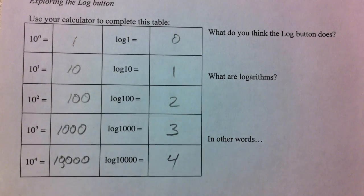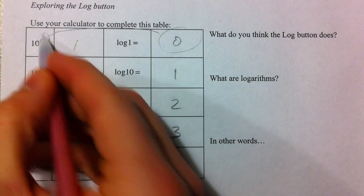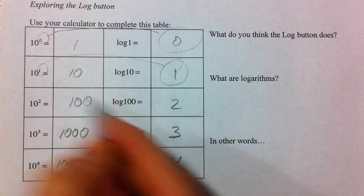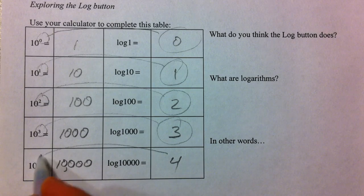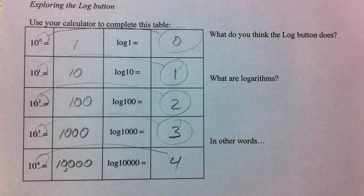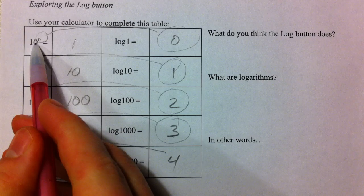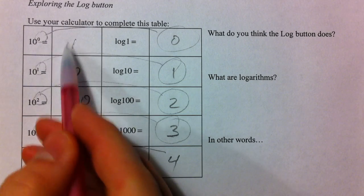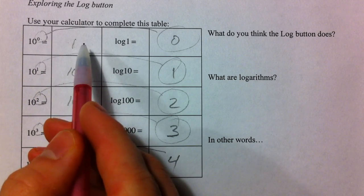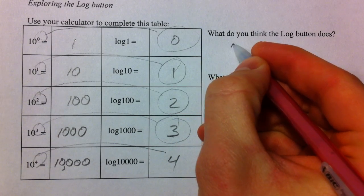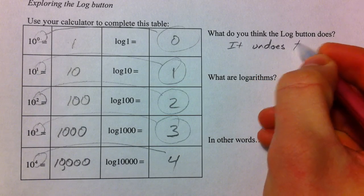So what do we think the log button does? Well, what I want us to draw our attention to is this 0 is the same as this 0. This 1, that 1. 2 and 2. 3 and 3. 4 and 4. So what do we think the log button does? If we take 10 to the 0, we get 1. And if we take the log of 1, it gives us that exponent again. And so the log is undoing, it undoes the exponent.